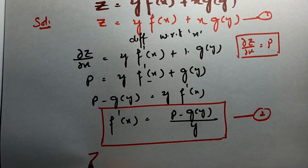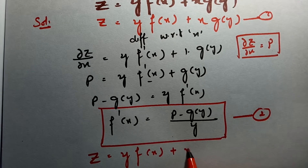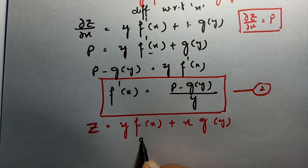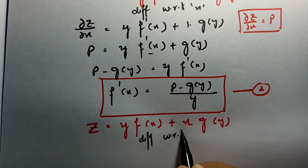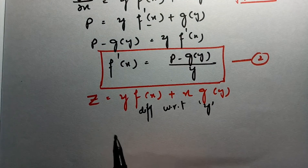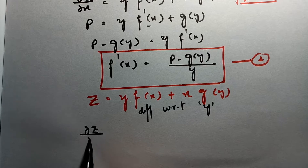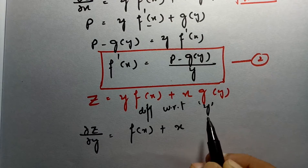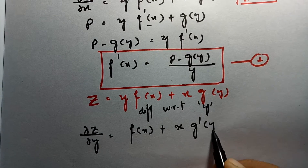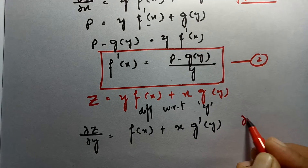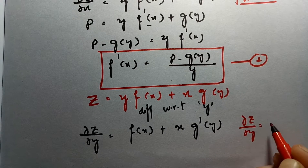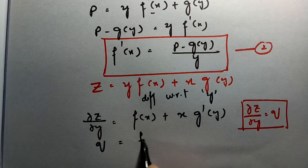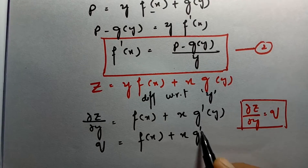Again, we have from equation 1: z = y·f(x) + x·g(y). Now I have to differentiate with respect to y this time. If I differentiate with respect to y, it will become ∂z/∂y = f(x) + x·g'(y). As you all know, we can write ∂z/∂y as q. Then it will be q = f(x) + x·g'(y).